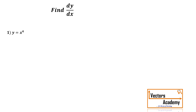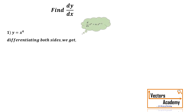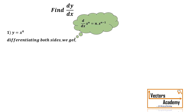Suppose the function is y is equal to x raised to 4 and we have to find the value of dy by dx — that means we have to find the differentiation of y. So differentiating both sides, I will get dy by dx is equal to 4x cube. It's quite simple, isn't it?